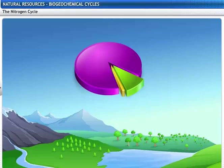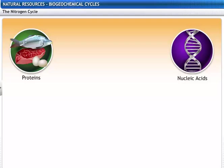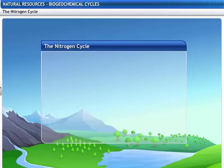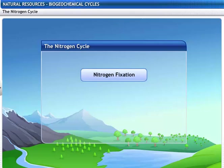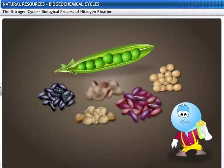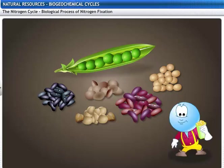Nitrogen makes up 78% of the atmospheric air. It is an essential constituent of proteins, nucleic acids like DNA and RNA, vitamins and chlorophyll, making it an essential nutrient for all life forms. Interestingly, most living organisms cannot use nitrogen directly, so it needs to be converted into usable forms by fixation — either biologically or physically. Legumes, such as pulses, are an important part of the nitrogen cycle.